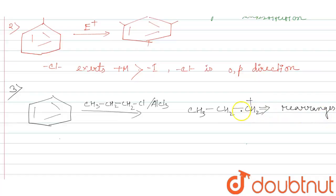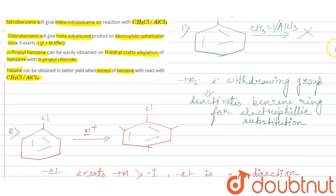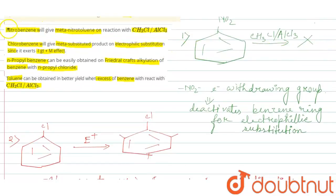And due to the rearrangement of this carbocation, we do not get n-propyl benzene. N-propyl benzene cannot be formed this way. So statement three is also incorrect.